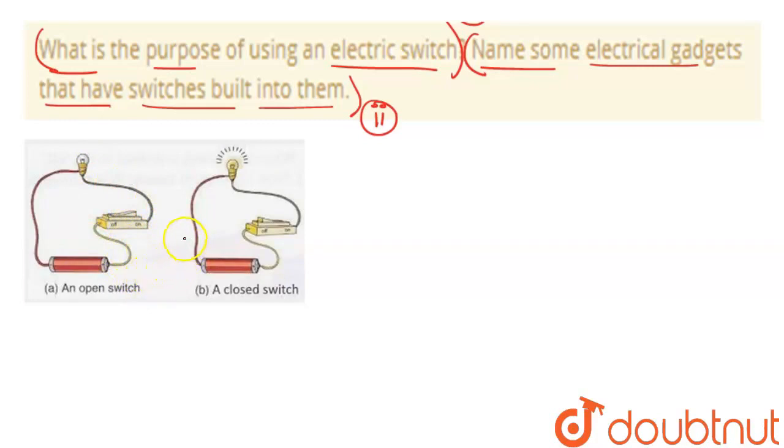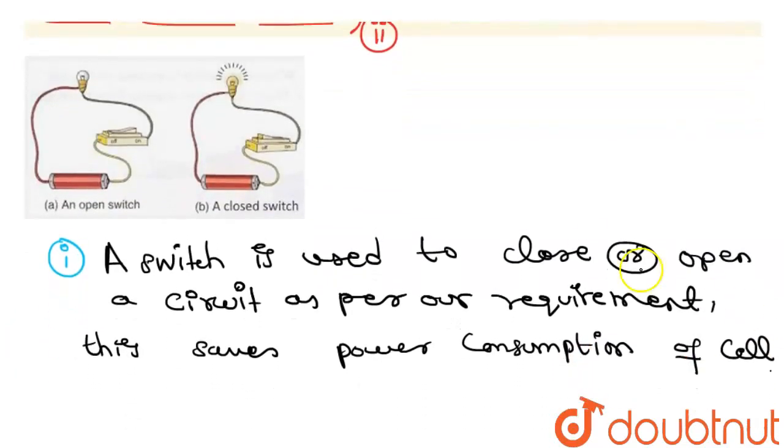We can open the circuit as per our requirement. This is very important. We can open and close the circuit, which allows us to control and save electricity.